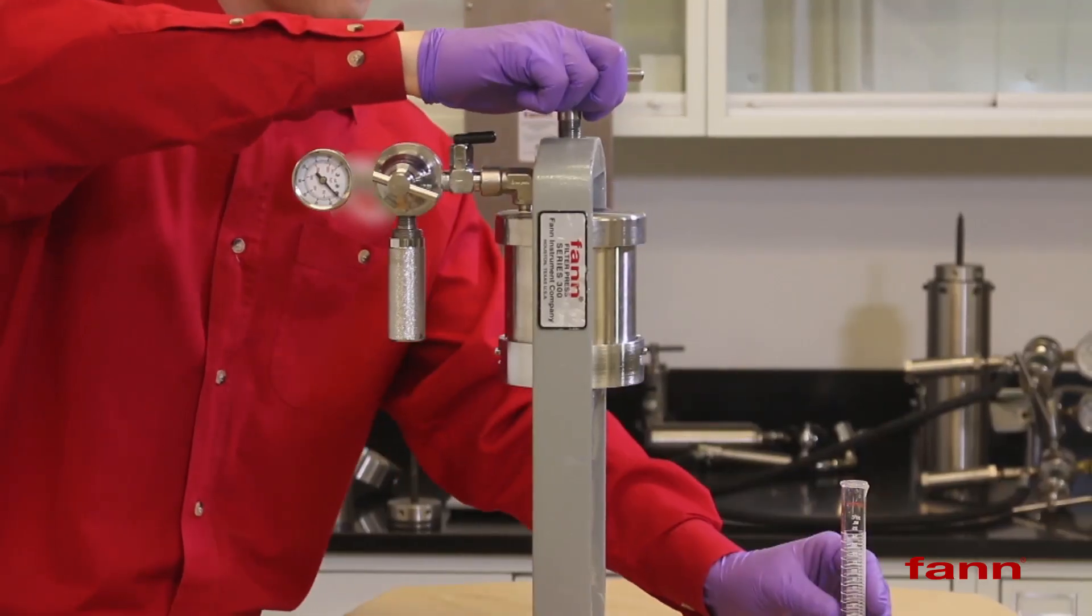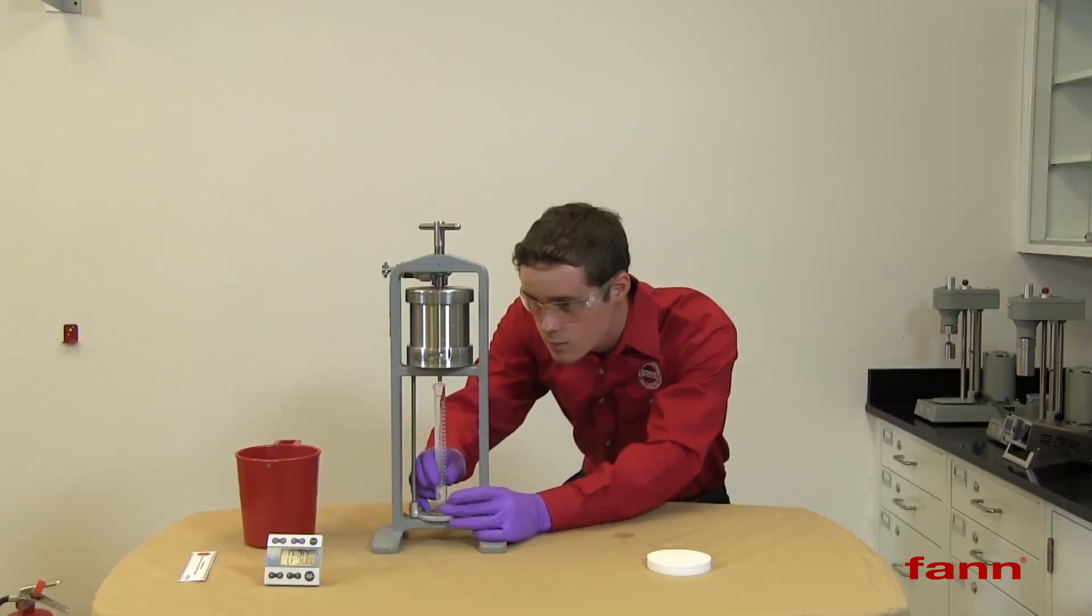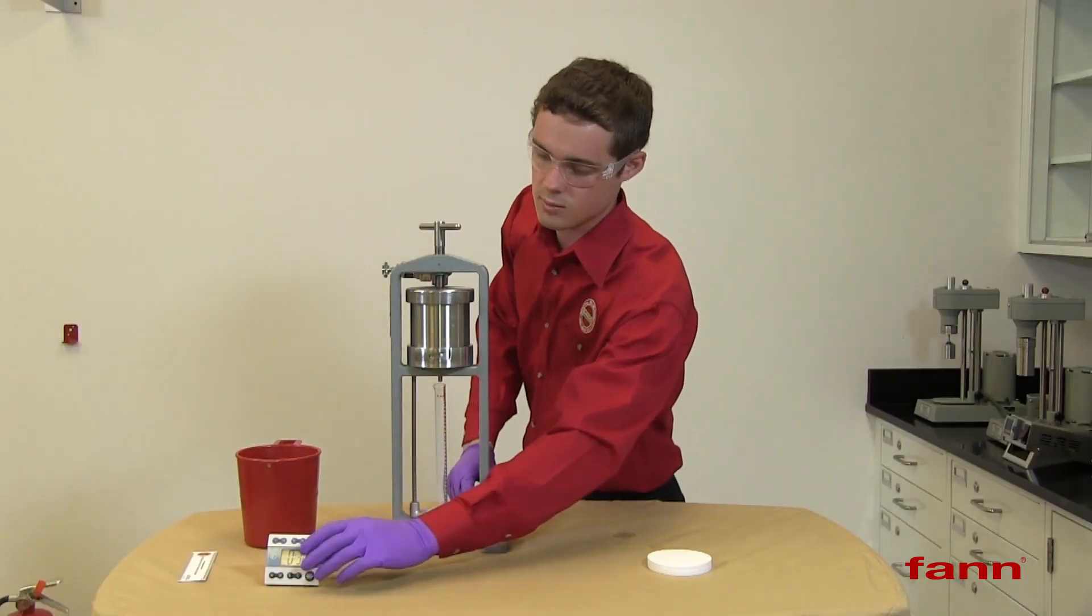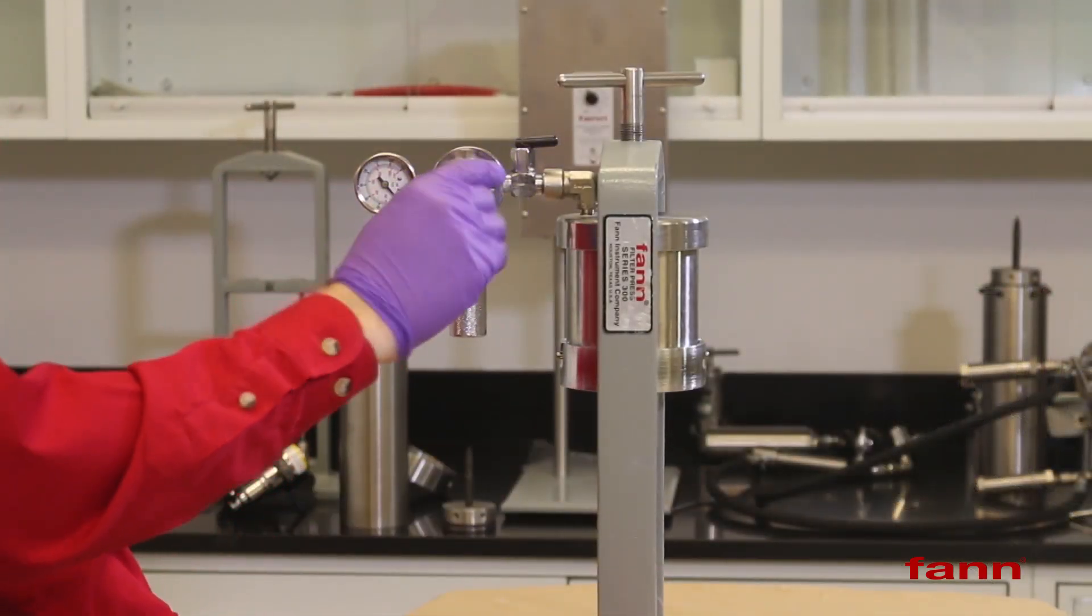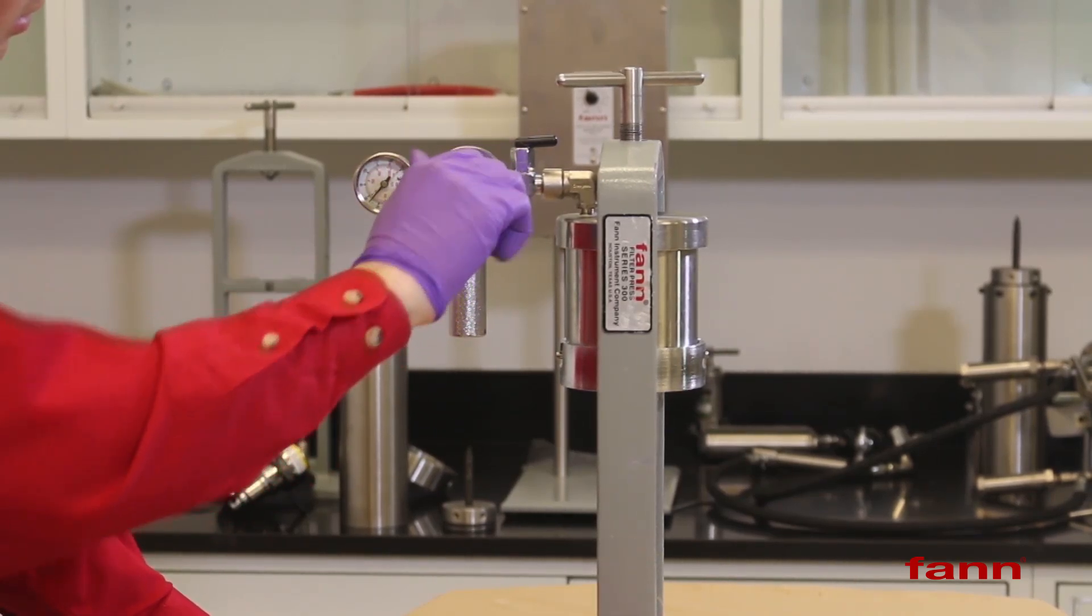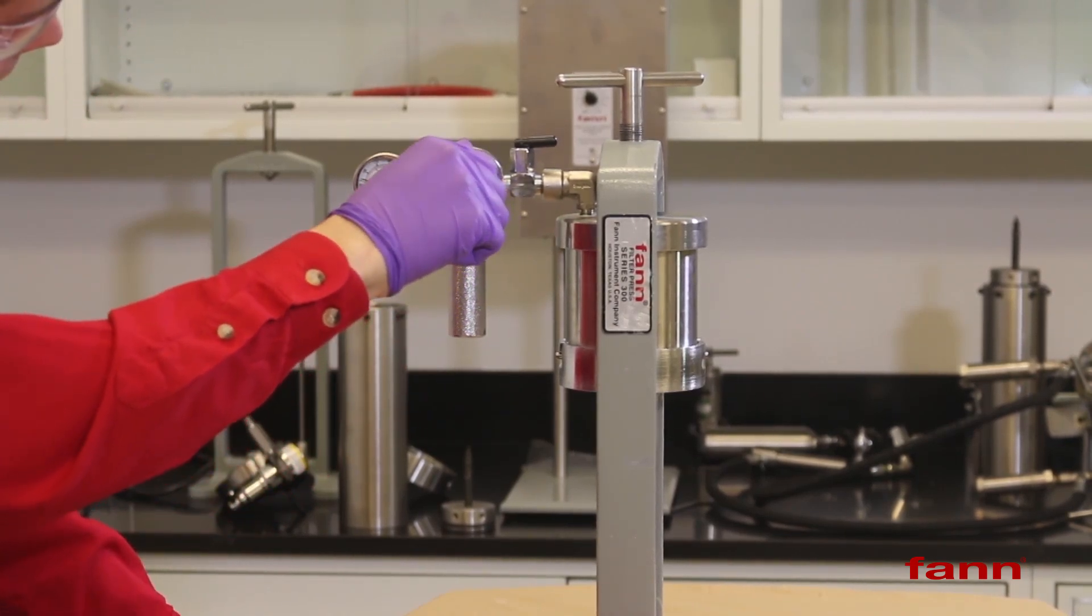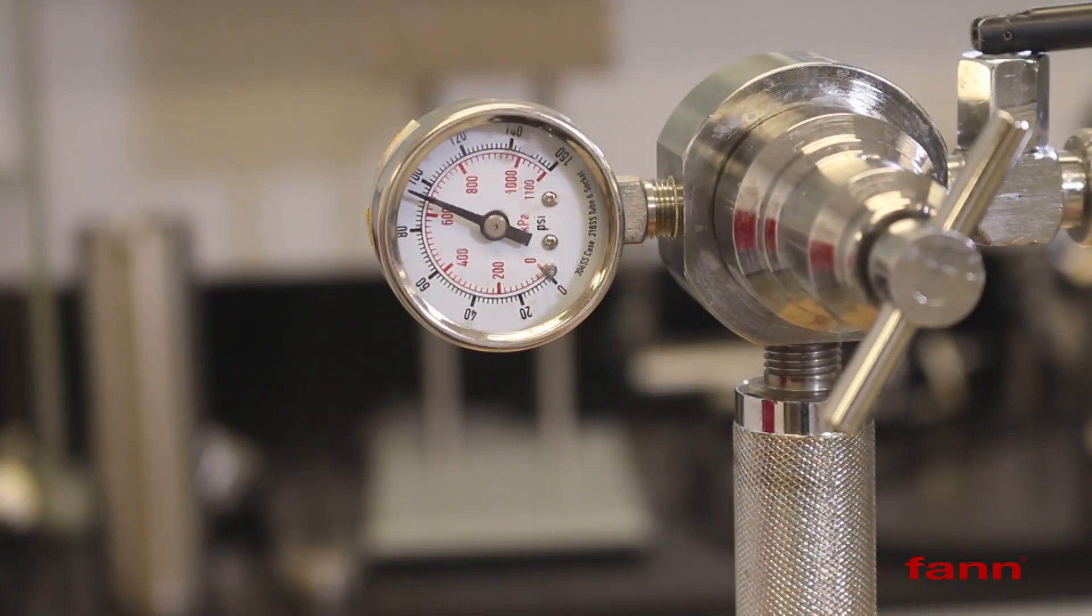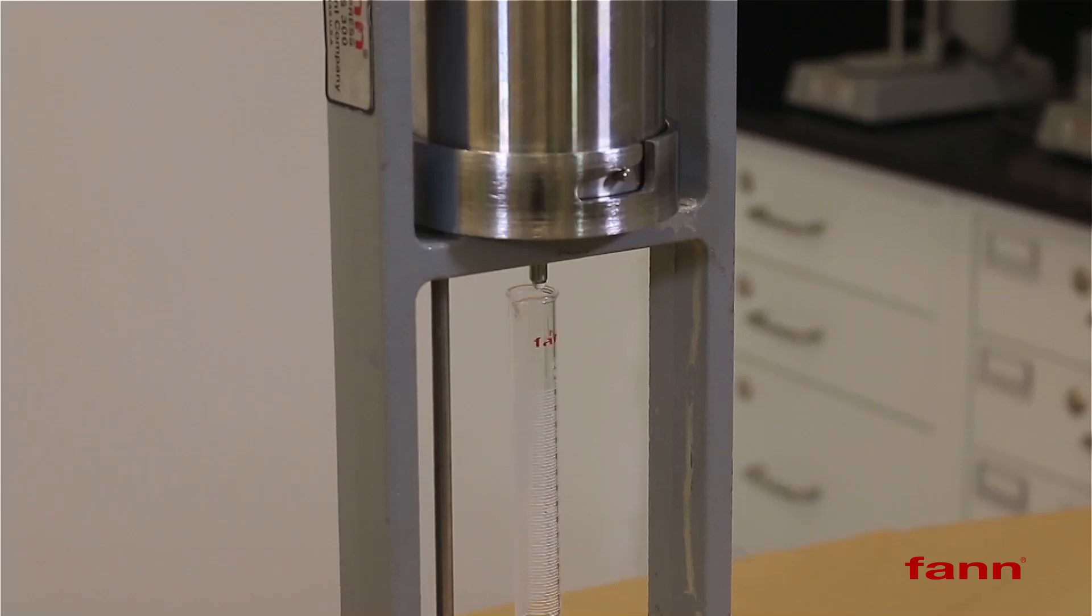Put a graduated cylinder underneath to collect the filtrate. Turn the regulator in to get 100 PSI on the cylinder as shown on the gauge. Set the timer for 30 minutes. Filtration rate is measured in milliliters of filtrate per 30 minutes of time.